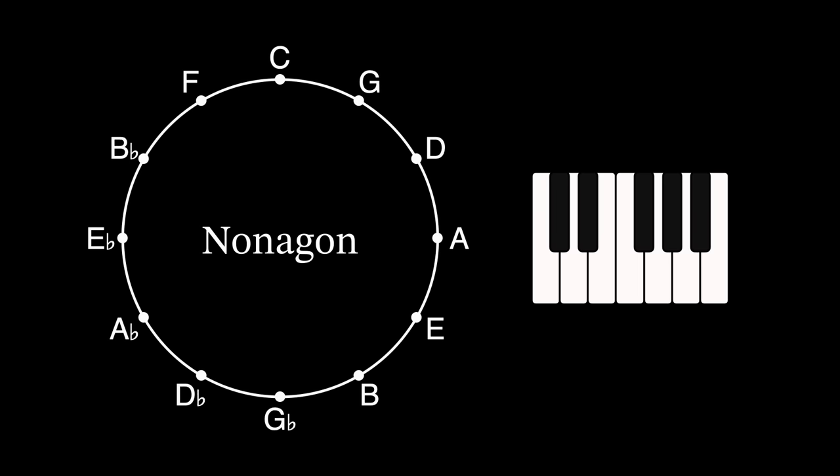A nonagon or nine-sided polygon plays augmented chords but three times as fast as the triangle and in the opposite direction.